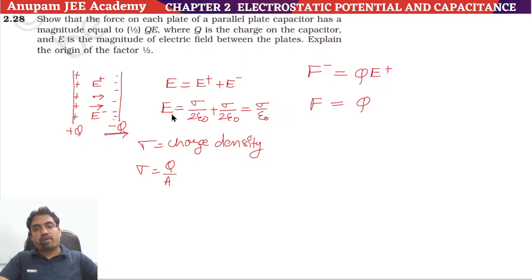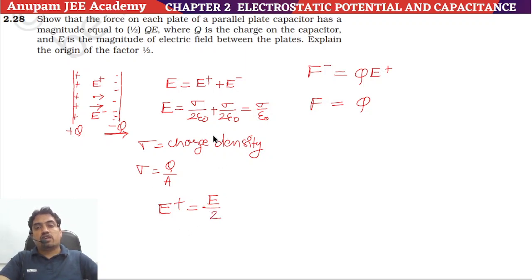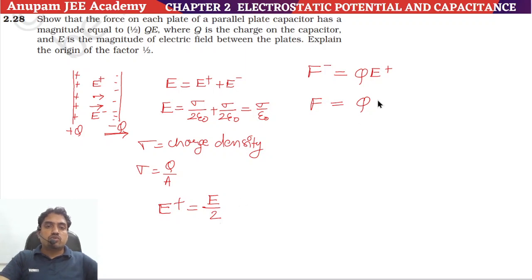The electric field due to the positive charge is sigma divided by 2 epsilon-naught — that is, it equals the total electric field inside the capacitor divided by 2. Since the total electric field is sigma by epsilon-naught, the electric field due to the positive charge is E divided by 2. So the force equals Q into E/2, which is (1/2)QE.